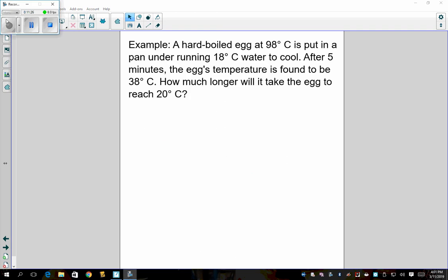So here we're given a situation where we have a hard boiled egg and its current temperature is 98 degrees Celsius. It is put in a pan under running water, which is 18 degrees Celsius. And after five minutes, the egg's temperature is 38 degrees Celsius. So we're asked how much longer will it take the egg to reach 20 degrees Celsius. So when I think back to that equation, I know my T minus TS equals T naught minus TS times e to the negative KT. Just first looking at this, I think I have to find K first. So I think I have to use this information to find K first because I'm given none of that.